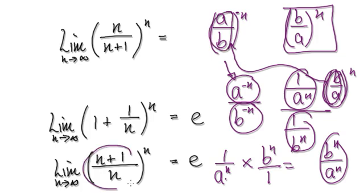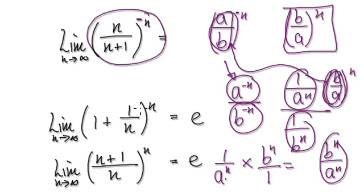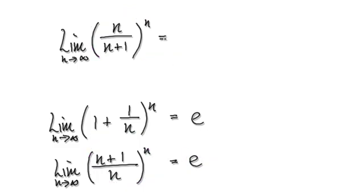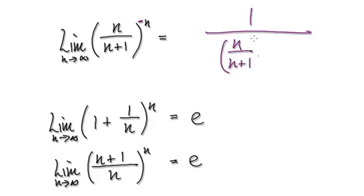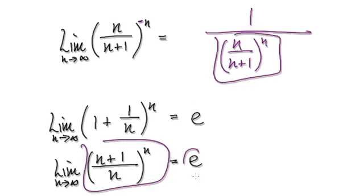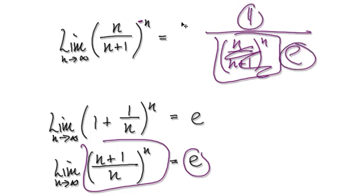The point here is that because this is the reciprocal — if you stick a minus in front, this whole thing here would be the same as this. So if you stick a minus in front, you can rewrite this as 1 over n over n plus 1 to the power of n. Now this thing here is exactly the same as this thing here, which is e. So the limit of this is actually 1 over e.